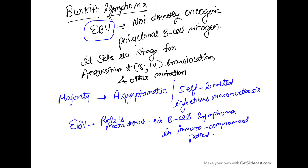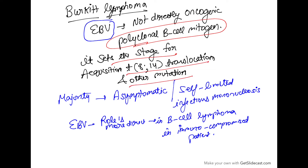Now talking about Burkitt's lymphoma: EBV is not directly oncogenic. It acts as a polyclonal B cell mitogen, so it doesn't directly cause oncogenesis. Instead, it sets the stage for acquiring translocations like the t(8;14) translocation and other mutations. Majority of patients infected with EBV are asymptomatic or have a self-limited illness like infectious mononucleosis. EBV's role is more direct in B cell lymphoma in immunocompromised patients than in other lymphomas.